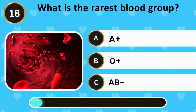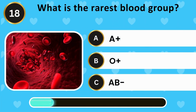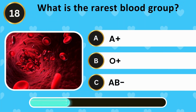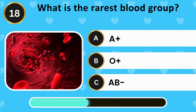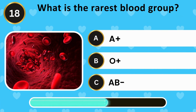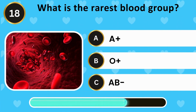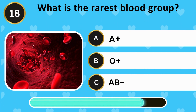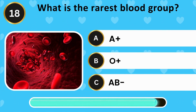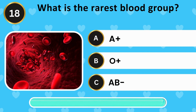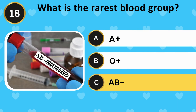What is the rarest blood group? A positive, O positive, AB negative. The answer is AB negative.